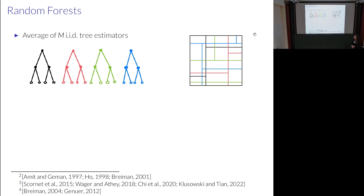Random forests are obtained by taking the average of M IID tree estimators. The resulting function is a random piecewise-constant function, constant over the cells of the partition induced by superimposing the partitions associated with each tree.